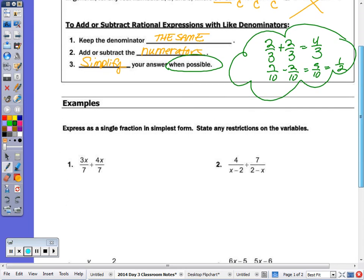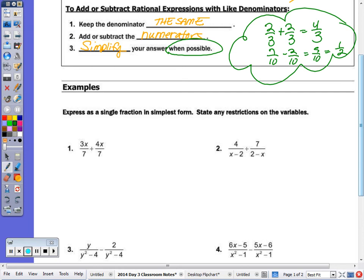Directions, for our example, say express as a single fraction in simplest form. Even when it doesn't say to express in simplest form, your answer should always be in simplest form. And state the restrictions. So 3x over 7 plus 4x over 7. When the denominator doesn't have a variable, you won't have a restriction. So there are no restrictions here.